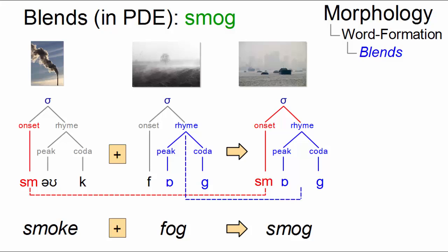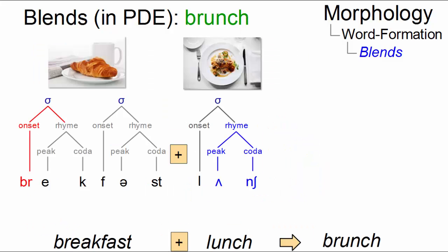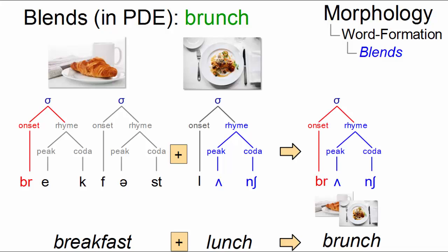In brunch, two words with different syllable structures are recombined, and again the result is a combination of the first onset and the last rhyme.